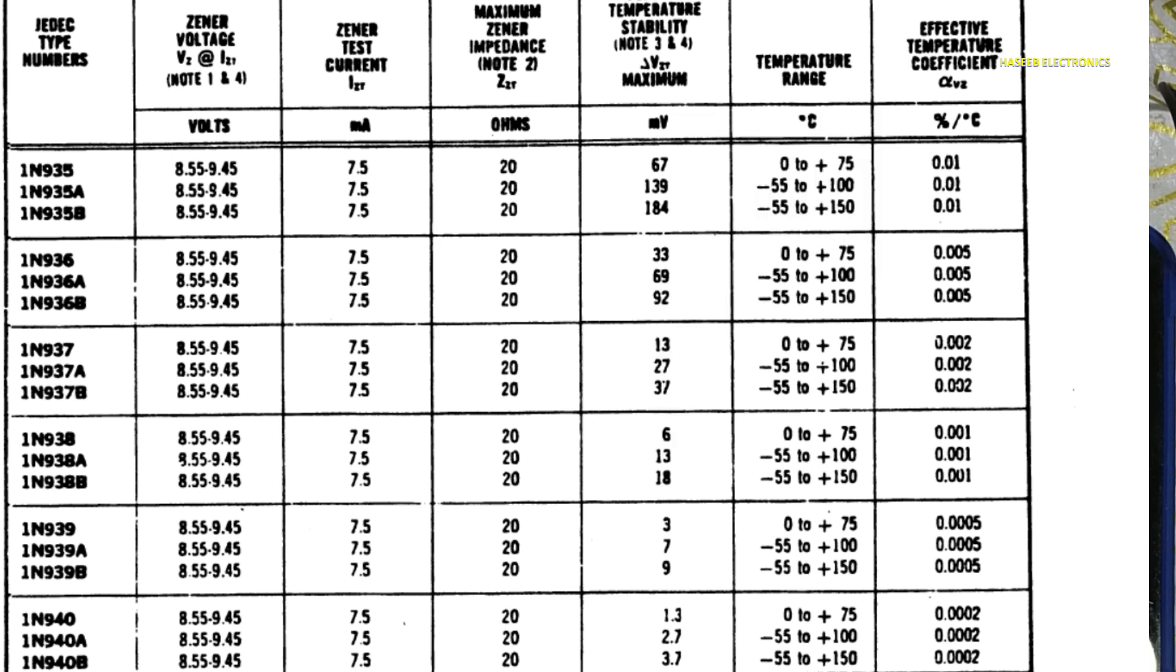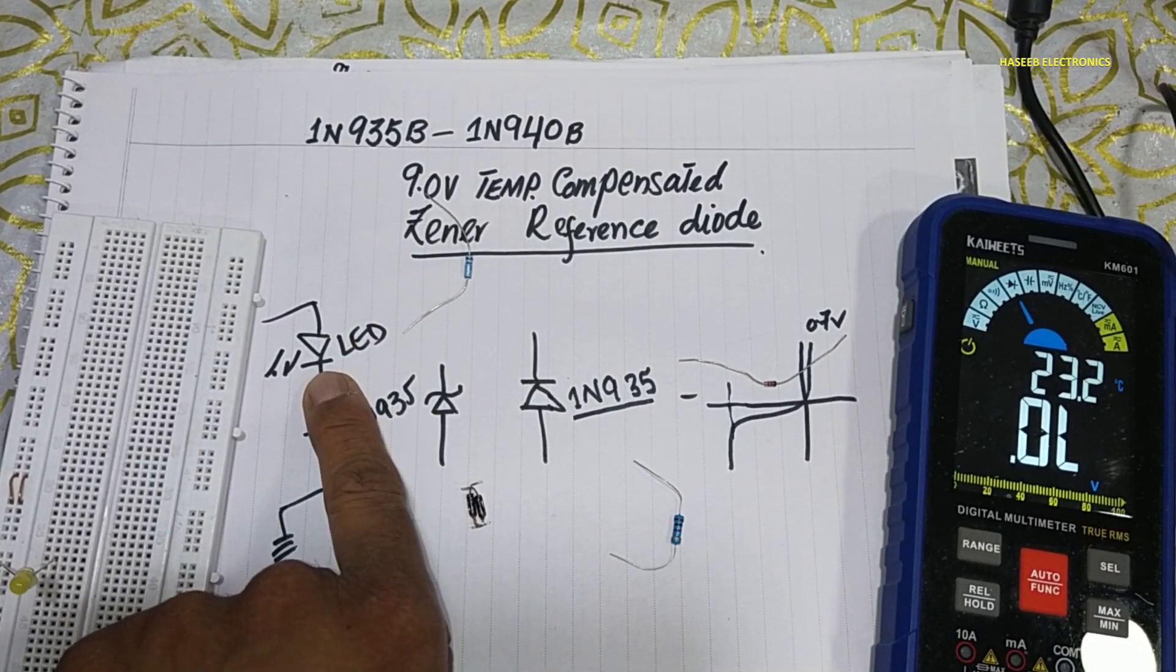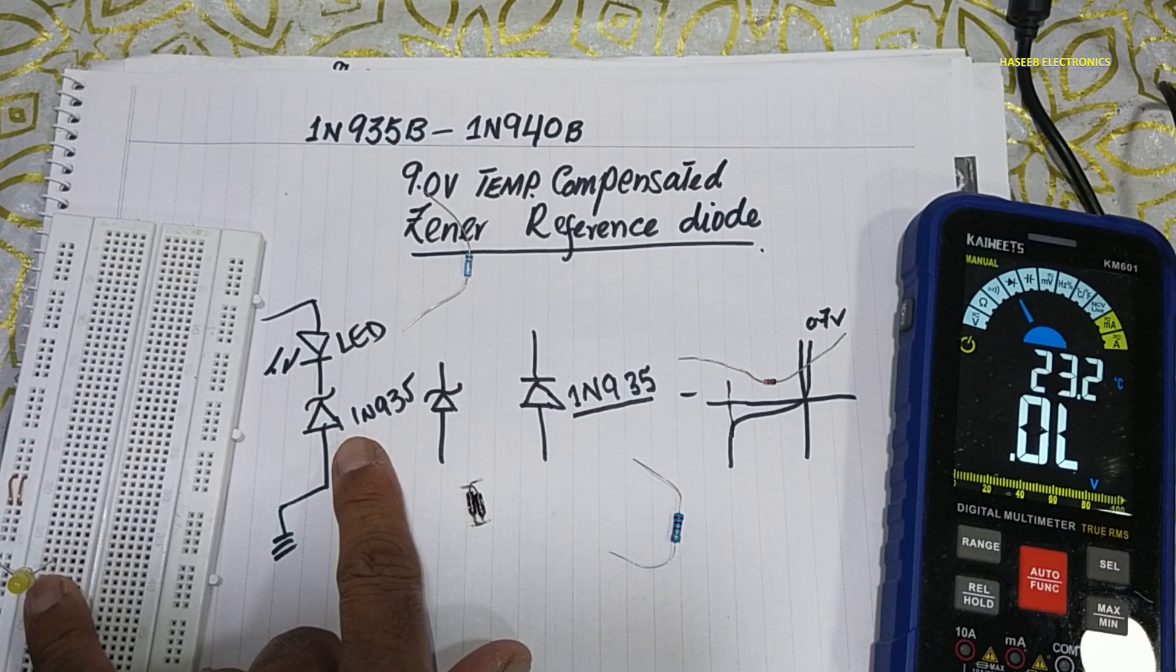And now you can see the parameter on the screen. For test purpose we can connect resistor here, but now to demonstrate I am connecting LED here.